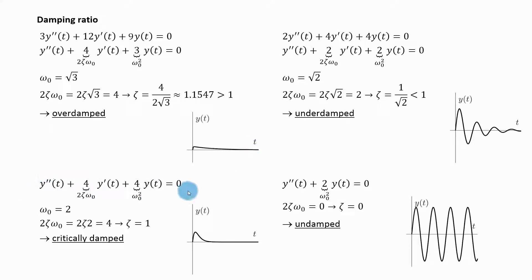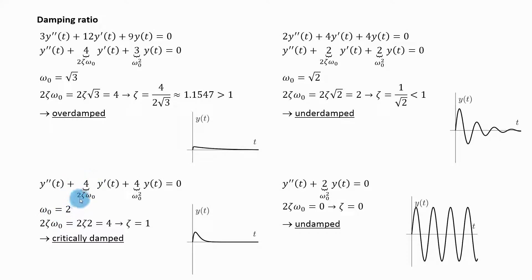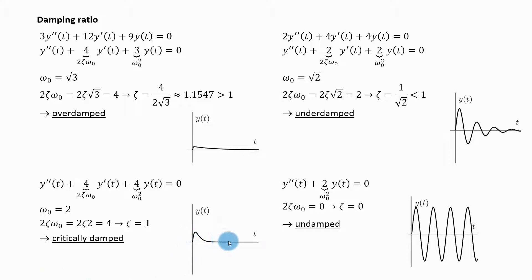Now let's take a look at this differential equation. It's a different differential equation but the question is the same: what kind of damping does my system have? Here the coefficient is already one so I do not have to divide by anything. I can directly read that my natural frequency squared is four, so my natural frequency is two, and two zeta omega naught is four. From there I can read that my zeta is one, meaning the system is critically damped. Its response will be quickly stabilizing but will not go into oscillations.